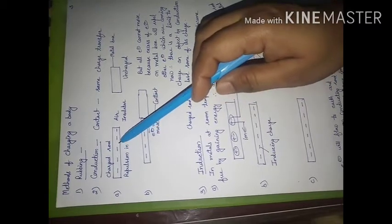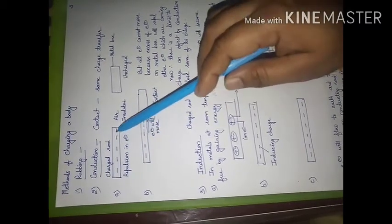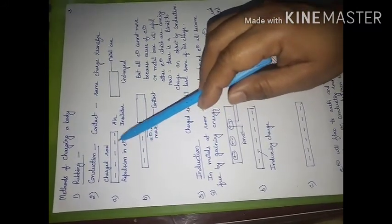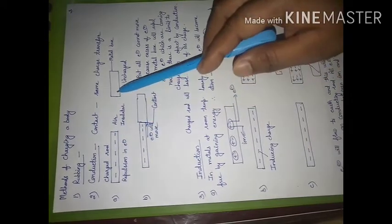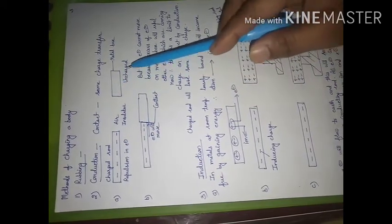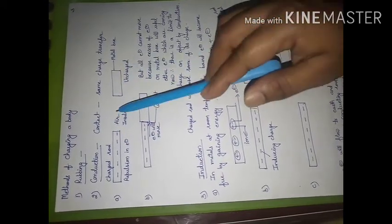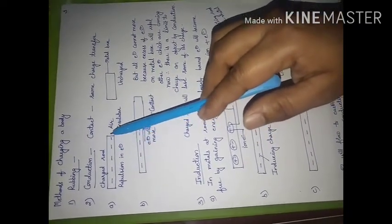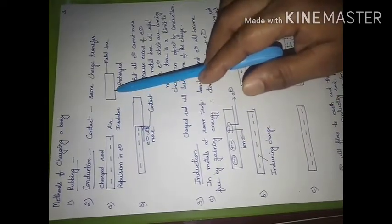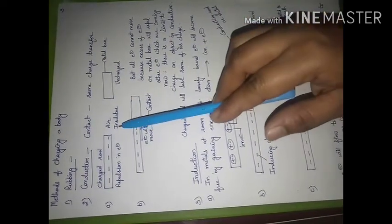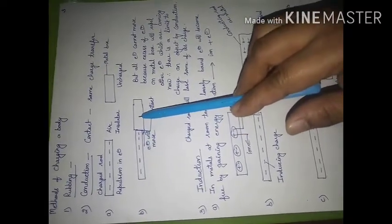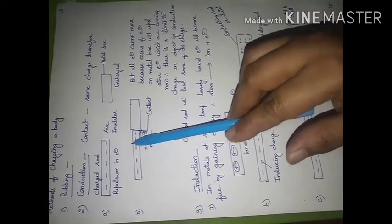This is a charged rod — negatively charged — so it has an excess of electrons. Between these electrons there will be repulsion. If we keep it in front of a metallic box, air is an insulator in between them, so it will not allow these charged particles to flow from this side to this side. But when we bring them into contact, electrons will move from this side to this side.